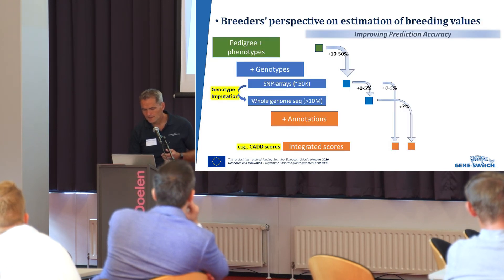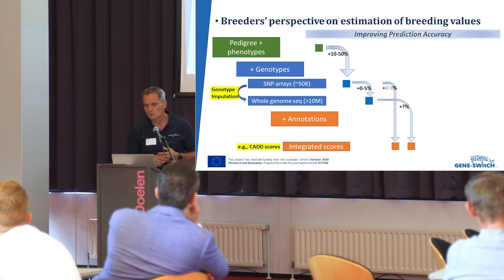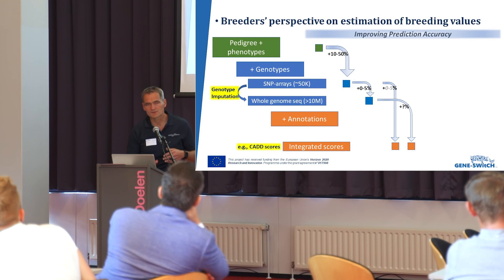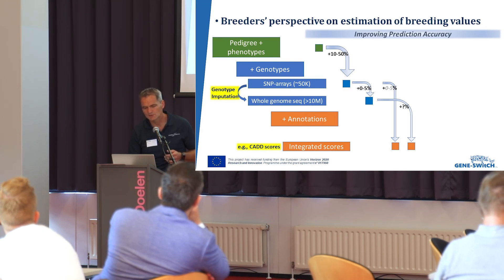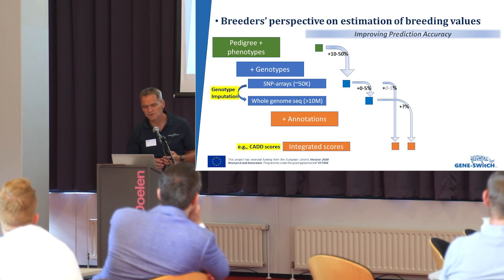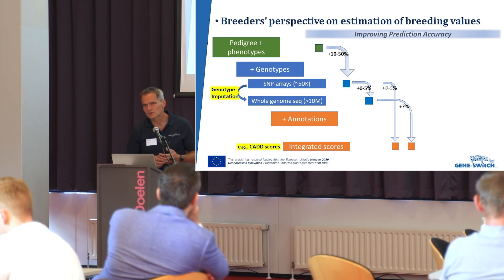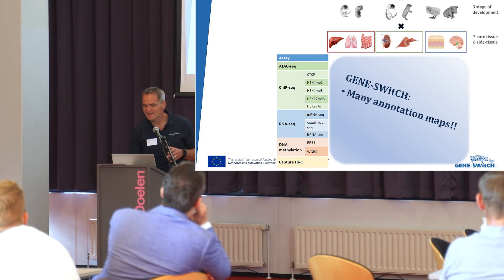If you just use SNP data and go from 50k SNP arrays to whole genome sequence, there are not many reports of a big increase in prediction accuracy — only zero to five percent gain. So breeders don't get very enthusiastic about that yet. The next step is to go from whole genome sequence and then use CADD scores — that's still an open question we still have to investigate. That could be more interesting because CADD scores link to SNPs or mutations that actually have an impact, whereas SNPs on a SNP array were not chosen a priori for high impact — they are neutral markers spaced along the genome.